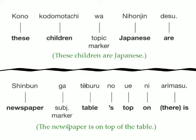Kono kodomo tachi wa Nihonjin desu — these children, Japanese, are. In other words, these children are Japanese.